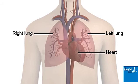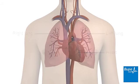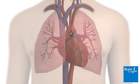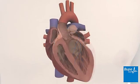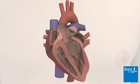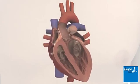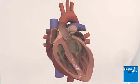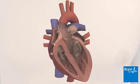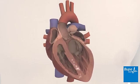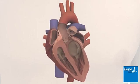Your heart is a muscular organ which lies in the centre of your chest. Your heartbeat is controlled by electrical impulses, which travel across the heart, making it contract.